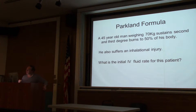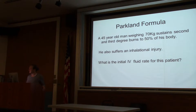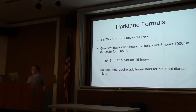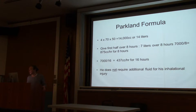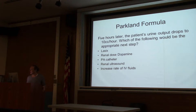For example: a 45-year-old man weighing 70 kilograms has a second- and third-degree burn over half of his body. Four cc's per kilogram times 70 kg times 50% burn equals 14,000 cc's total. He gets the first half — 7,000 cc's — over the first eight hours, then 875 cc's per hour for the next sixteen hours. This is a rough gauge; if urine output drops off, give more volume. Urine output is the best gauge of resuscitation.